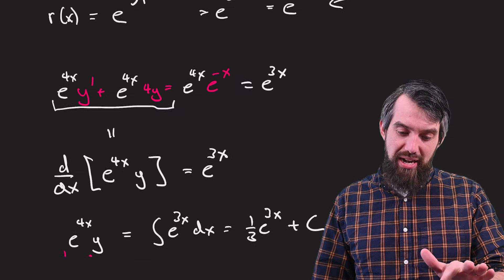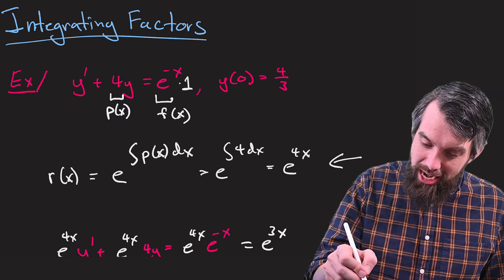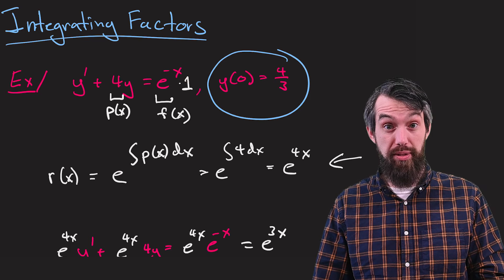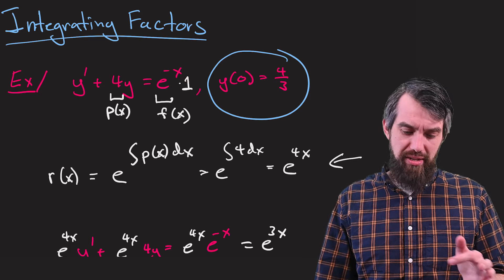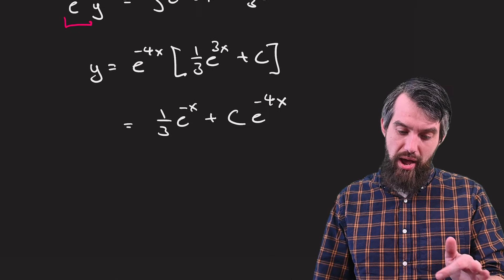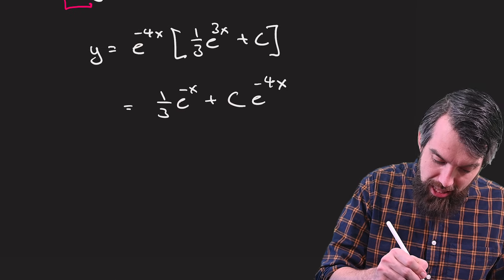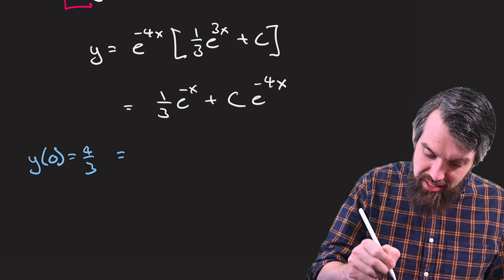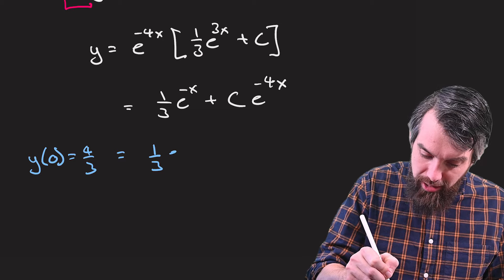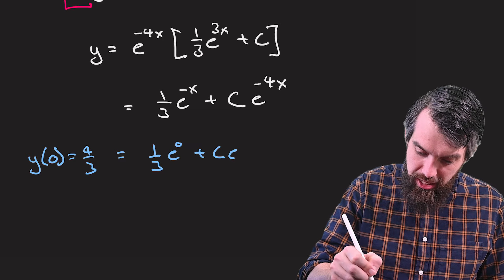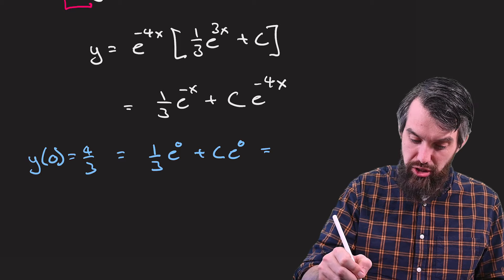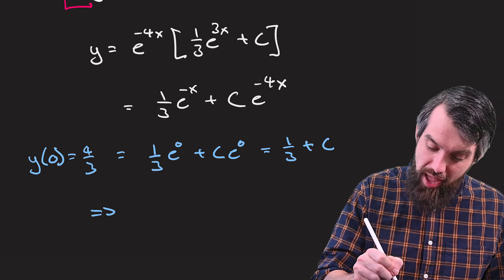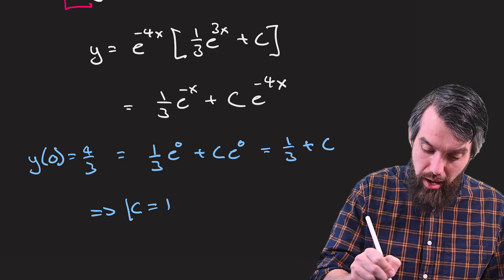But I do want to go back to the beginning to remind ourselves that, in fact, we actually also had this initial condition that y(0) was equal to 4 thirds. So let's see how we can deal with that. I'll scroll back down. And what I want to plug in is that y at x equal to 0 is equal to 4 thirds. And so that's the same thing as 1 third, well, e to the 0 is just going to be 1 plus a constant. This is just going to be 1 third plus C. And this is the same thing as saying here that C is equal to the value of 1.